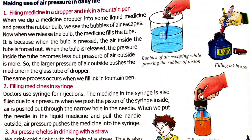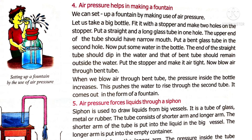Air pressure also helps in making a fountain. For this, take a big bottle and fit it with a two-hole stopper. Put a straight, long glass tube through one hole — its upper end should have a narrow mouth. Put a bent glass tube through the second hole, but be careful: the end of the straight tube should be dipped into the water, while the bent tube should remain outside the water. When you blow air through the bent tube, the pressure inside the bottle increases, which pushes the water to rise through the straight tube and come out in the form of a fountain.